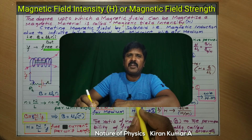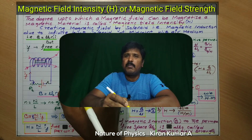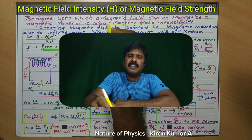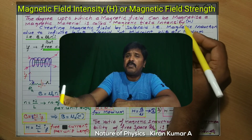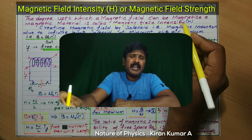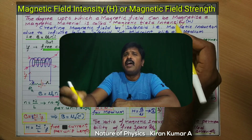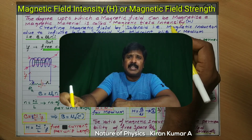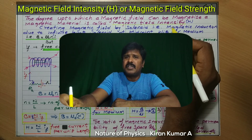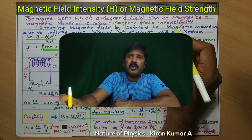Hello, I'm Kiran Kumar from Nature of Physics. Today's topic is the most interesting and important topic about magnetic field intensity or magnetic field strength. The next video will cover intensity of magnetization, the third will be magnetic susceptibility, and the fourth will be the cycle of magnetization and hysteresis slope. We will discuss each clearly, one by one, video by video.